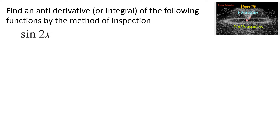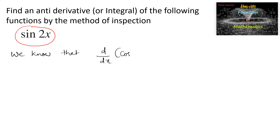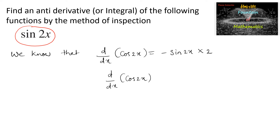Find an antiderivative or integral of the following functions by the method of inspection: sine 2x. We know that the derivative of cos 2x — that is, d by dx of cos 2x — is equal to minus sine 2x times the derivative of 2x, which is 2, by using the chain rule. That is, the derivative of cos 2x is equal to minus 2 times sine 2x.